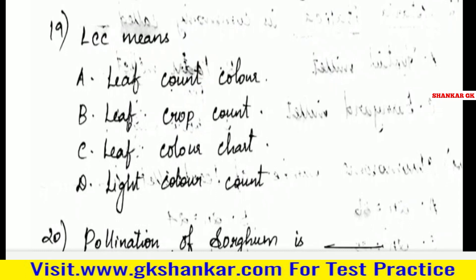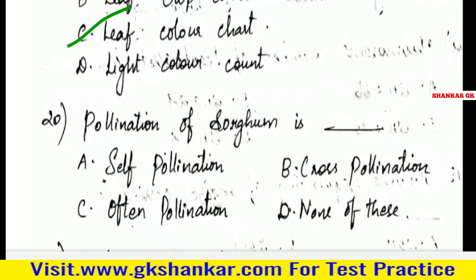Nineteenth question: LCC means — A. Leaf Count Color, B. Leaf Crop Count, C. Leaf Color Chart, D. Light Color Count. Answer: C. Leaf Color Chart.